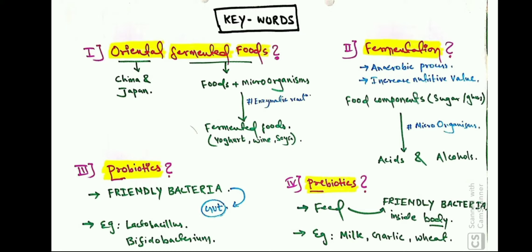Fermented foods are produced by microorganisms through enzymatic reactions that convert food compounds. Examples of fermented foods include yogurt, wine, vinegar, and soy sauce. The next keyword is 'probiotics.' Probiotics are good, or friendly, bacteria inside our gut — our normal flora. Examples of probiotics are Lactobacillus and Bifidobacterium. They are living microorganisms that provide a health benefit to the human body.